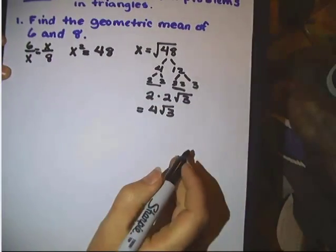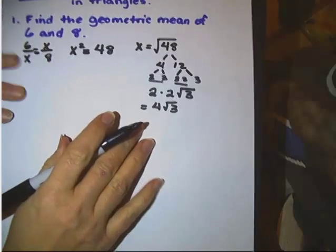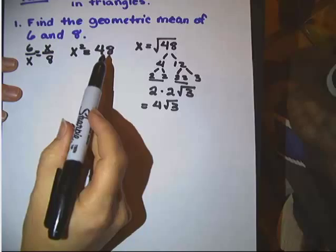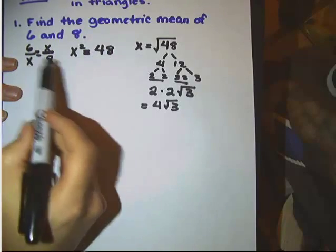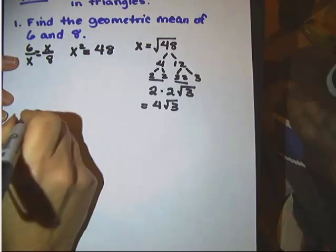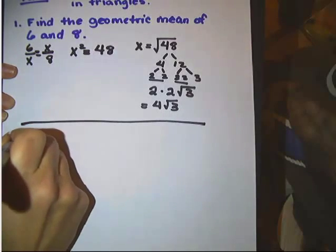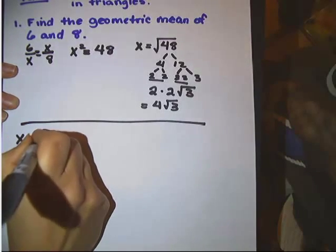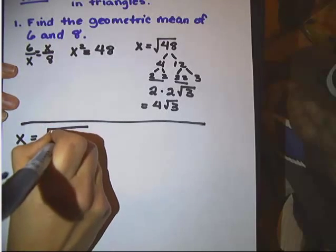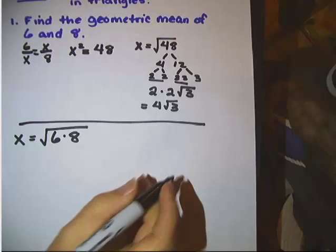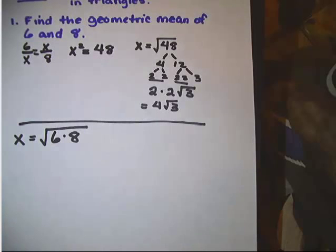There is a shortcut way. What we really did, once we cross-multiplied, is we took the square root of the product of the two numbers. So the shortcut is: the geometric mean equals the square root of the product of 6 and 8. You get the square root of 48 again, which is 4 root 3.